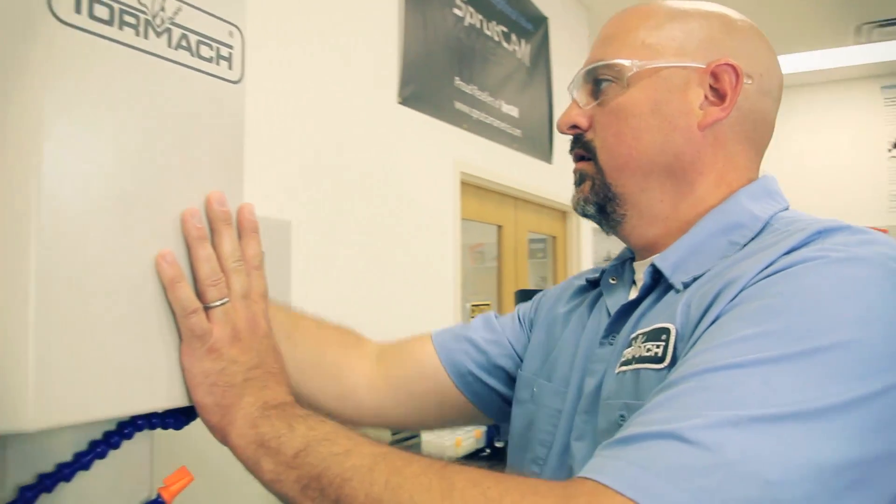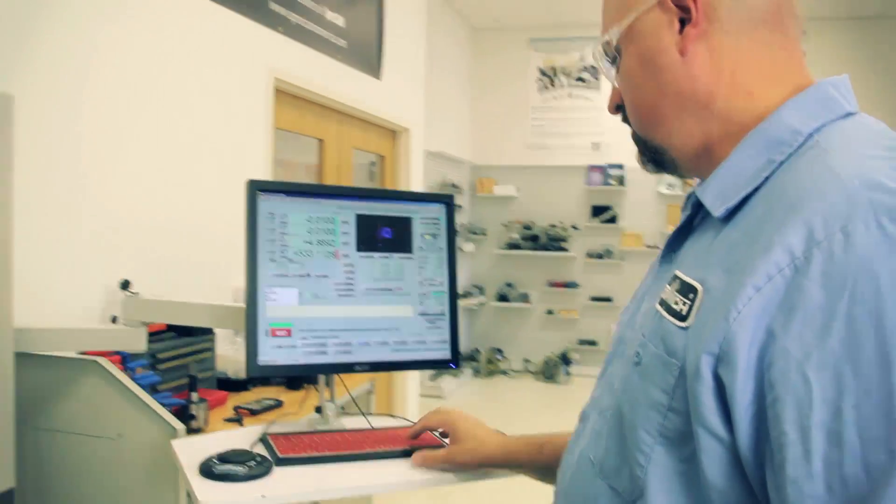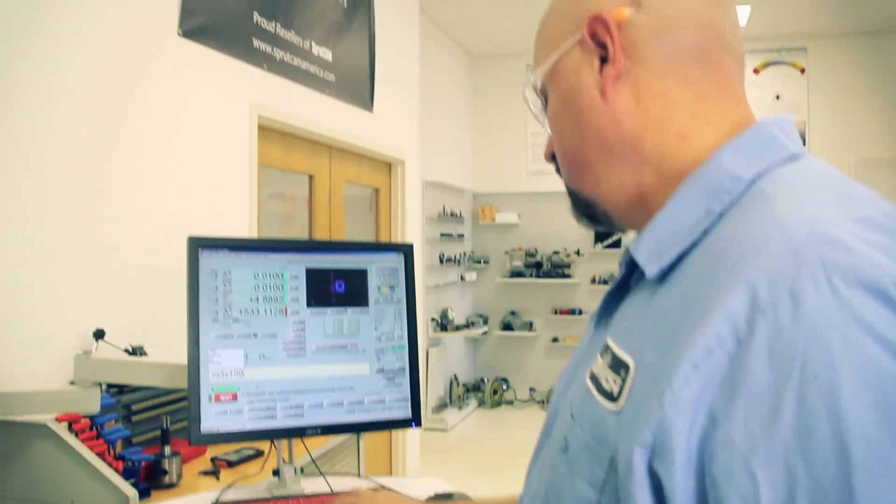The directions say to run this either by hand or approximately 80 RPM. The Tormach does 100. We'll use 100. It says max 150 RPM. So 100 RPM should be great. So we'll close the door. Spindle on at 100. M3 S100. Enter.